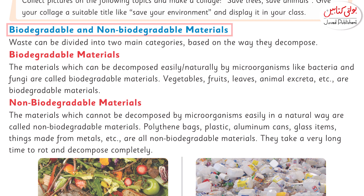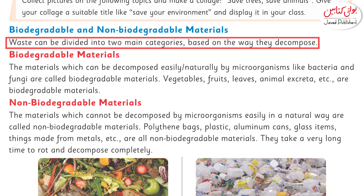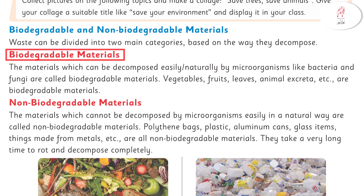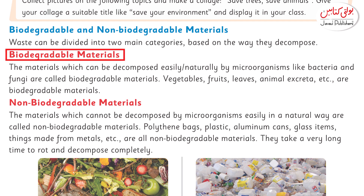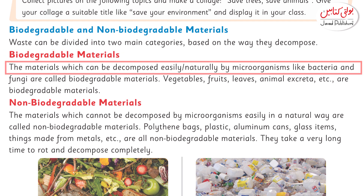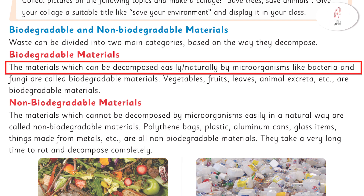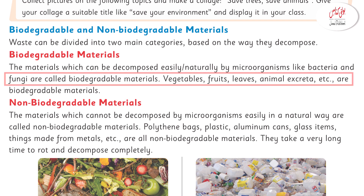Waste can be divided into two main categories based on the way they decompose. The first is biodegradable materials. These are the materials which are naturally decomposed by microorganisms like bacteria and fungi.